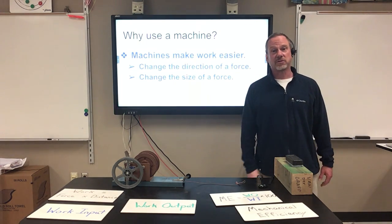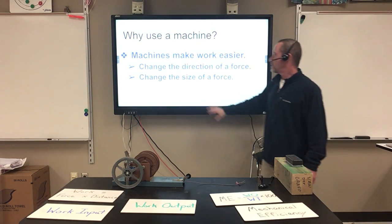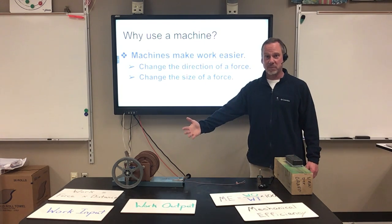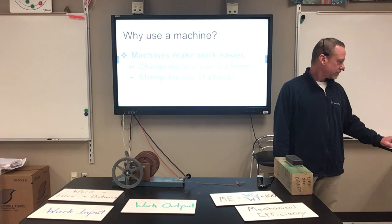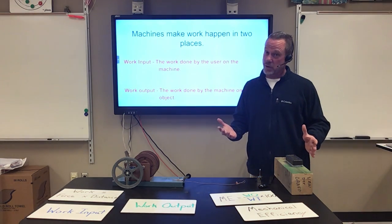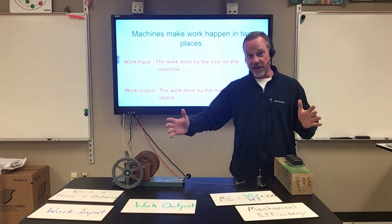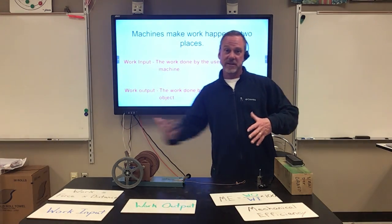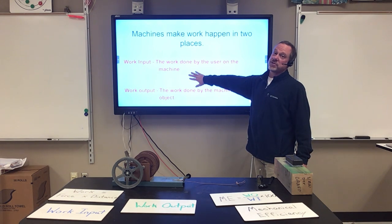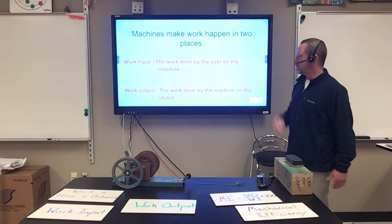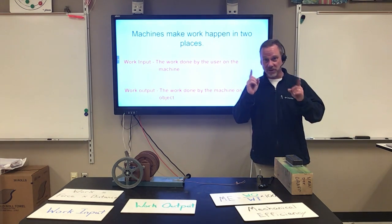Machines can make work easier in two ways: they change the direction of the force I apply — called the input force — or they can change the size of the force I apply. Both of those things make machines very useful. Machines also make things more complicated: if I do the work directly I have one force and one distance. If I use a machine, I now have the work I do to the machine and the work the machine does to the object. The work I do to the machine is called the work input — work done by the user on the machine. The work the machine does on the object is called the work output.